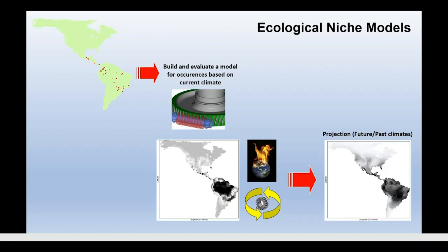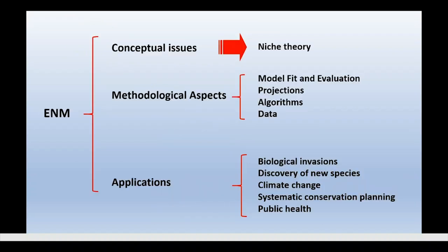Let's start with the quick overview. By now you already know everything about ENMs in terms of getting data, fitting and testing models, and projecting these models to get a description of the geographical range and environmental suitability in current, past, or future environments. This is the very standard idea of ENMs. It's quite usual to think first in some general conceptual issues, then move to methodological aspects such as model fit evaluation, algorithms, projections, data, and then finally think about applications in terms of biological invasions, discovery of new species, climate change, systematic conservation planning, public health, and many other ideas.